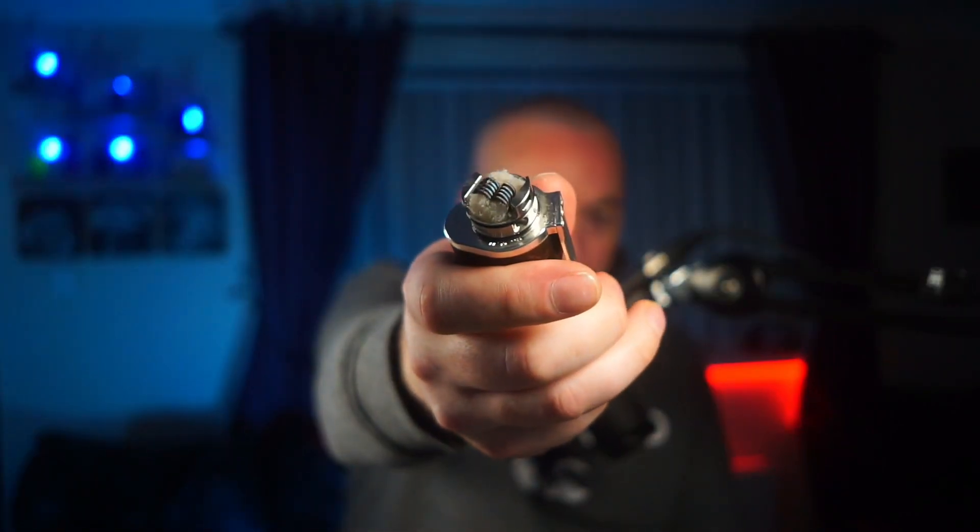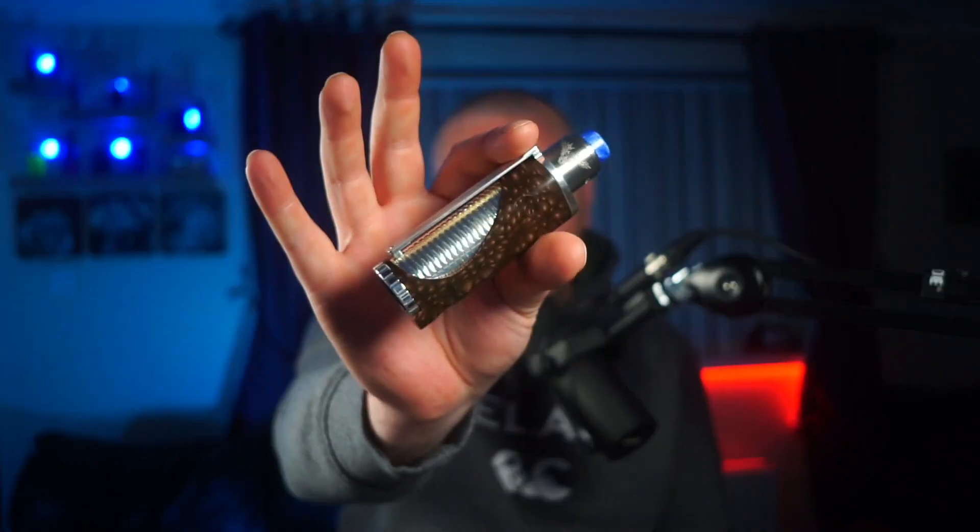Back up top with the Screamer RDA with the fused Claptons we built, and they came out perfectly at 0.1. For me, a 0.1 set of fused Claptons or even Aliens are perfect for a single battery mech. This is a 21700 mech from Fallout Vape, and it's performing very well with the fused Claptons in.